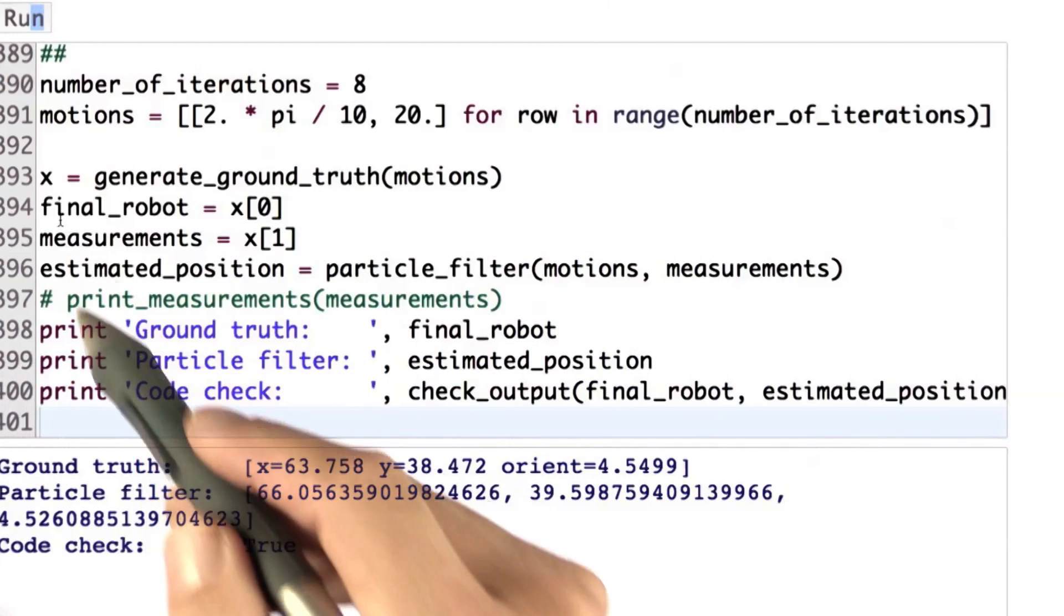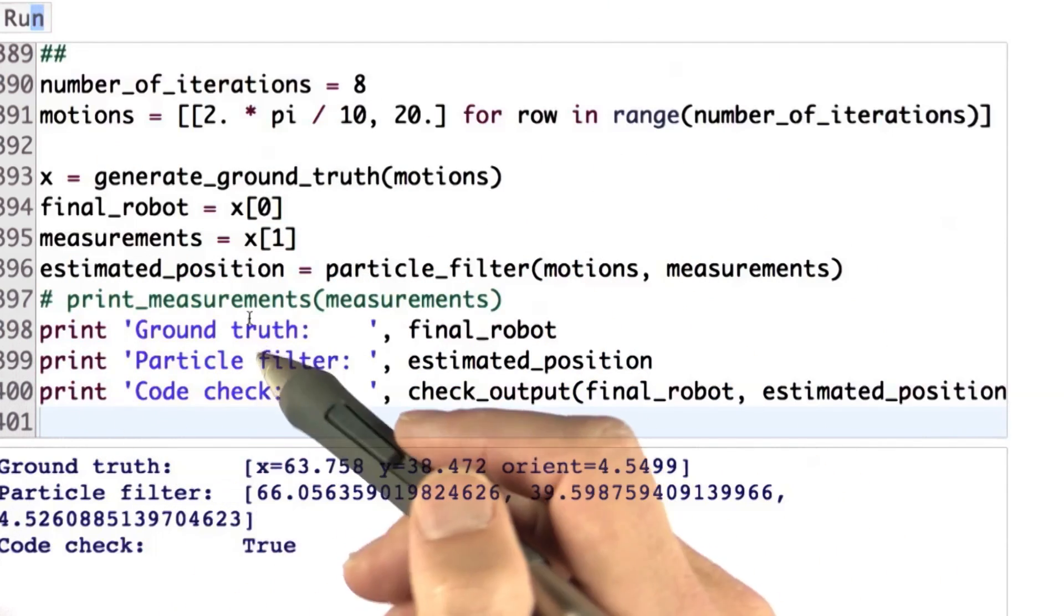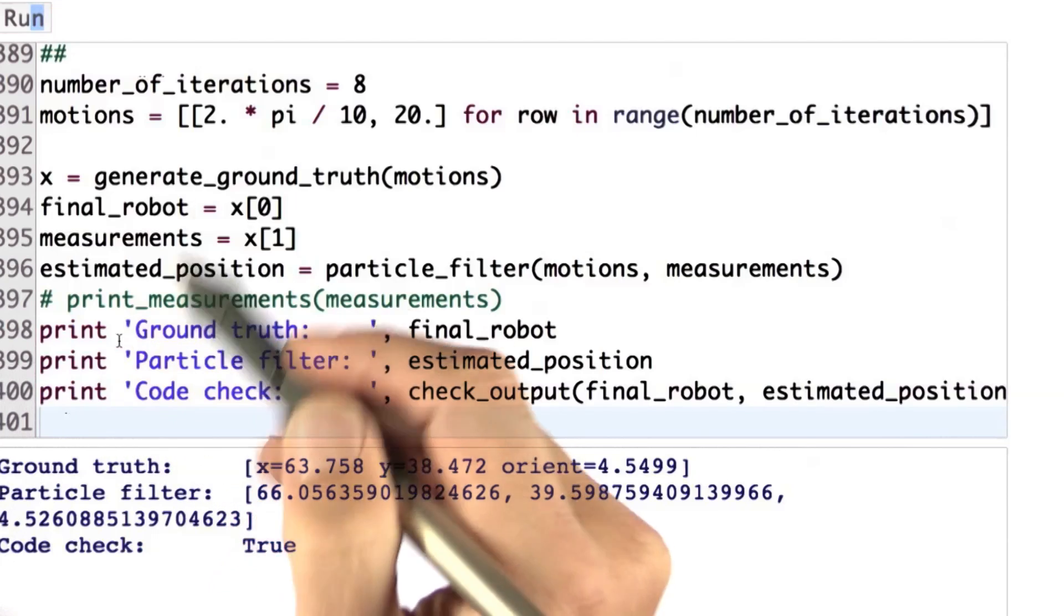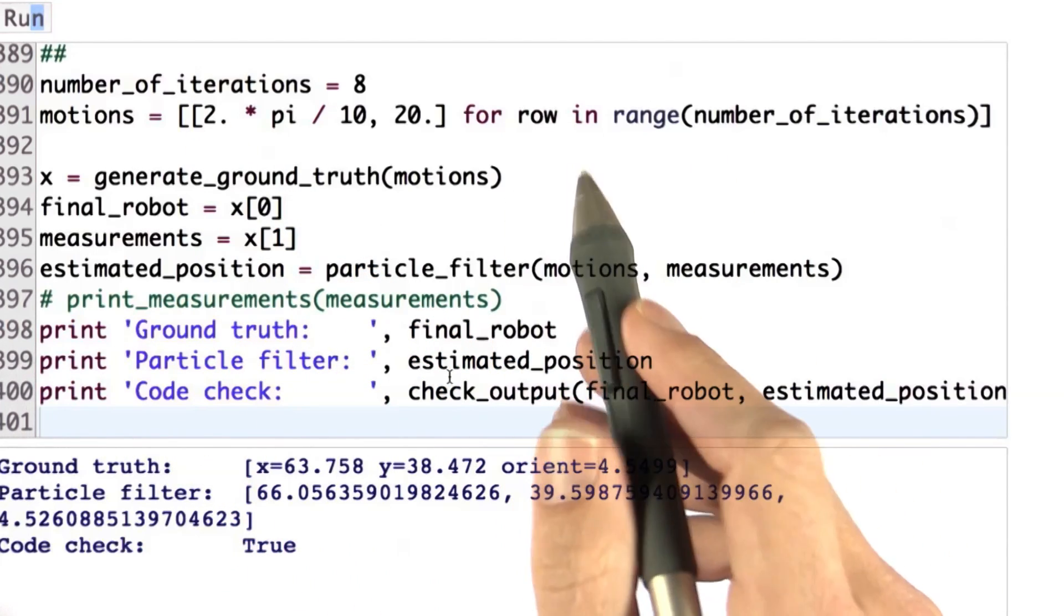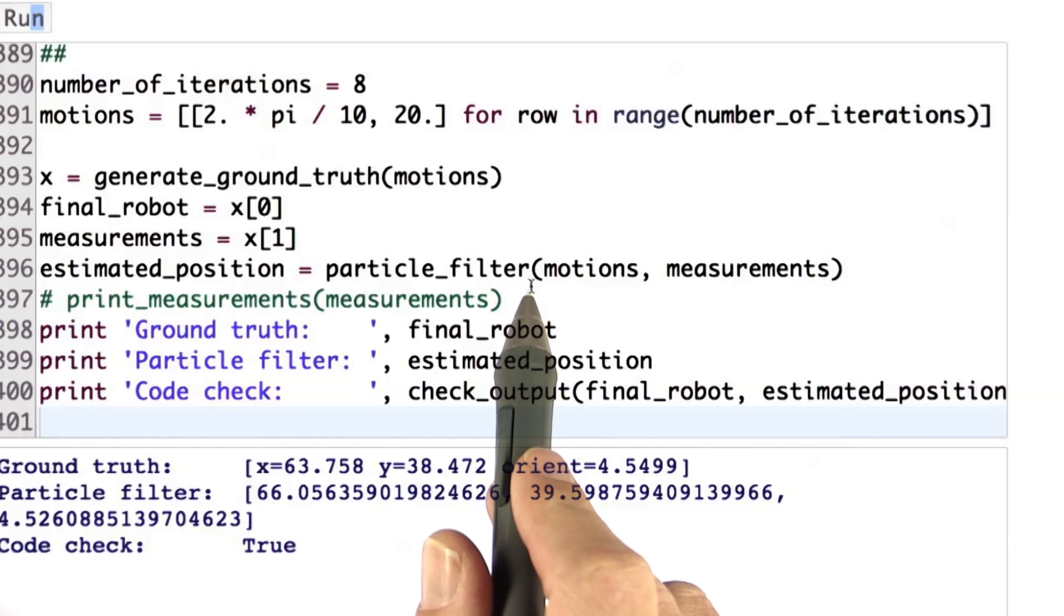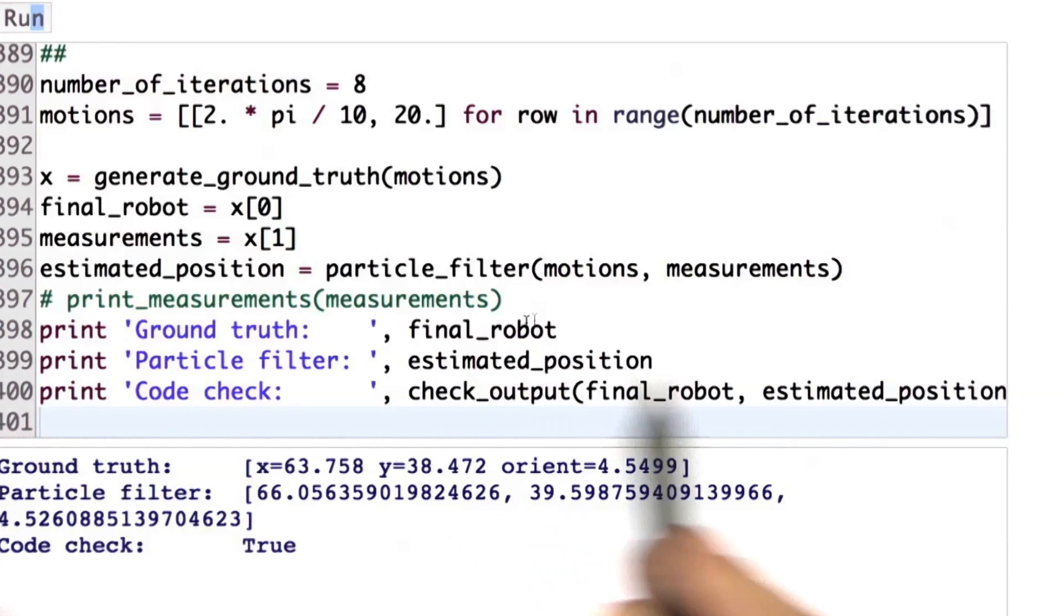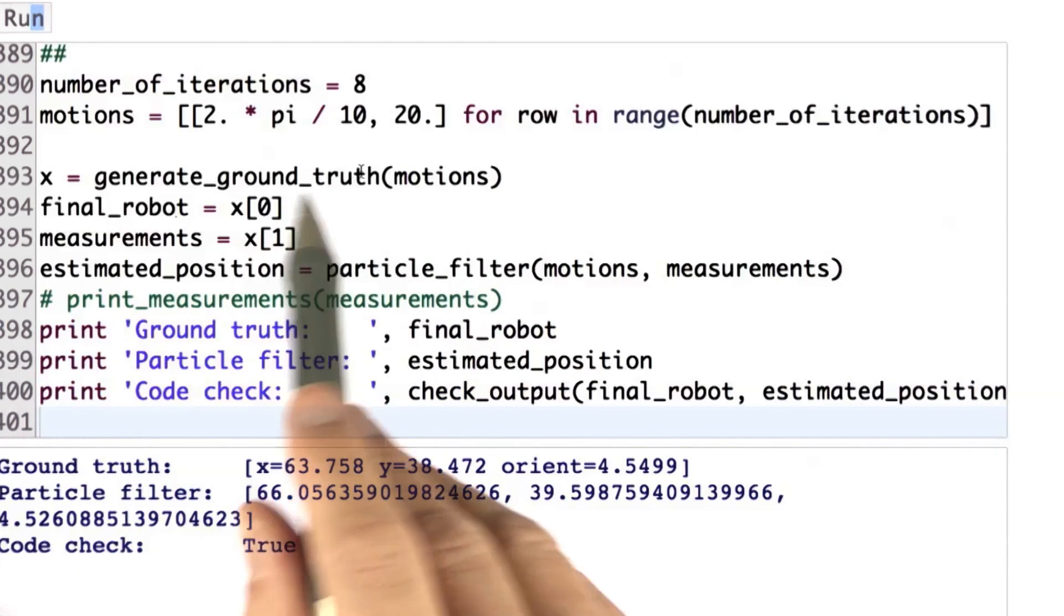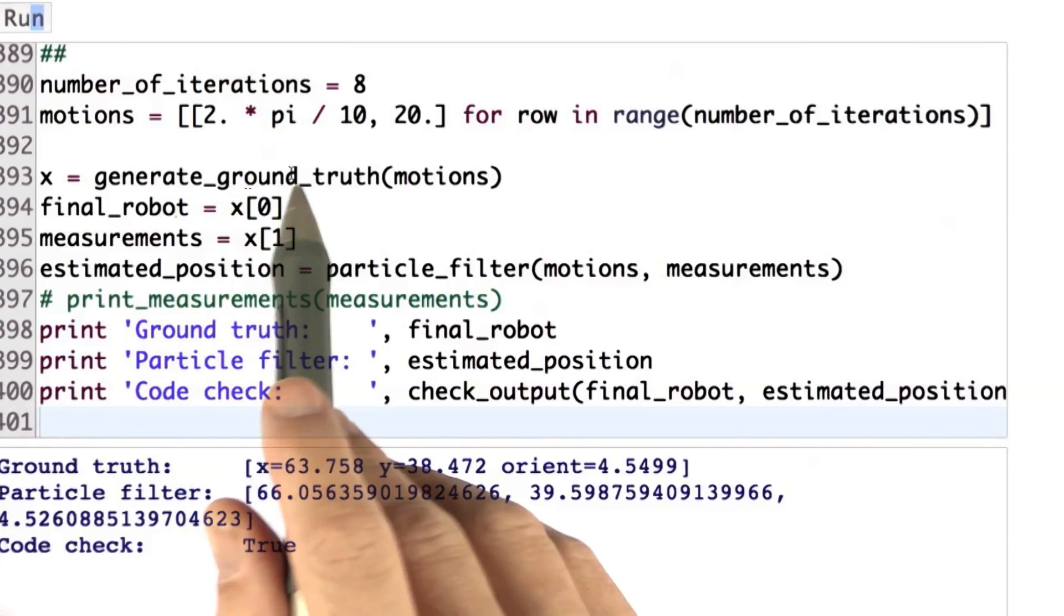You can basically grade yourself with this test case over here. But when you submit it, have those commented out, because we have our own test software. And all you're going to test is whether your particle filter gives us a good estimate when we choose randomly the initial position of the robot, measurements, motions, and so on.